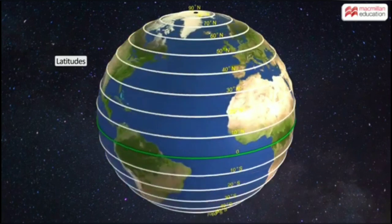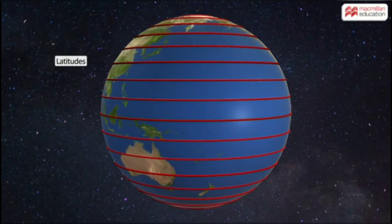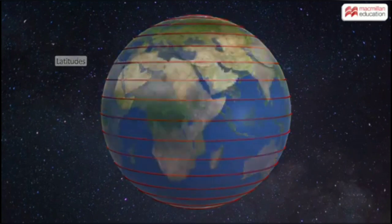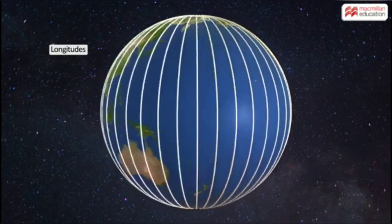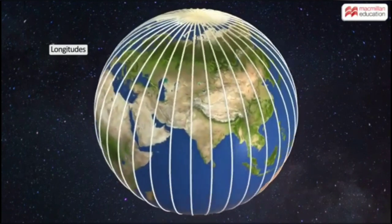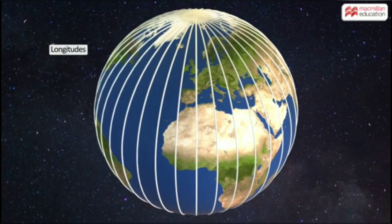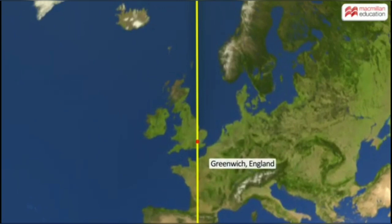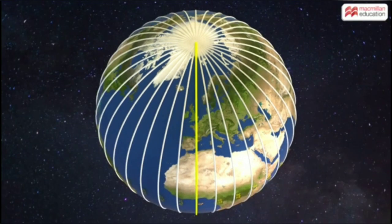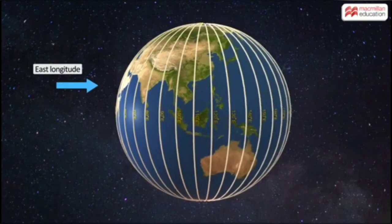The earth is round, and so the length of the latitude decreases as we move towards the poles. Longitudes or meridians are the imaginary lines drawn between the two poles. They divide the earth into 360 equal segments, like that of an orange. The 0 degree longitude passing through Greenwich in England is called the Prime Meridian. One half of the world is measured in 180 degrees longitude east, while the other half in 180 degrees longitude west.